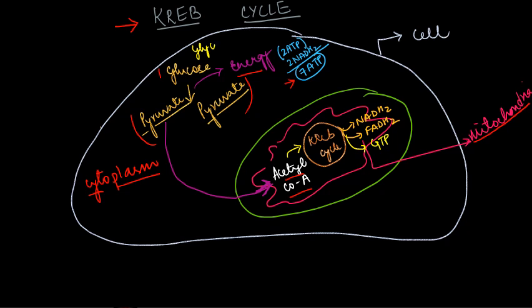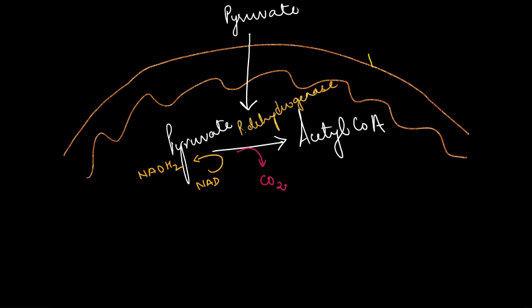So what we get from this slide: glycolysis takes place in the cytoplasm, and from one molecule of glucose we get two molecules of pyruvate, each having three carbons — three carbon plus three carbon equals six carbons. The energy from glycolysis is 7 ATP. The pyruvate produced from glycolysis enters into the mitochondria, where it gets converted to acetyl coenzyme A.